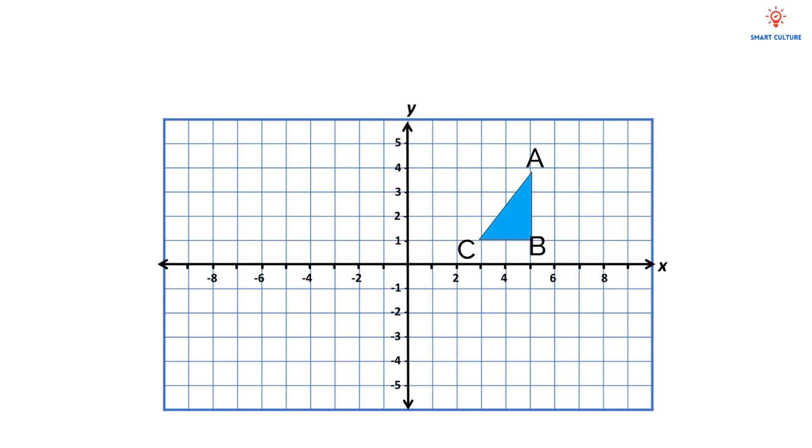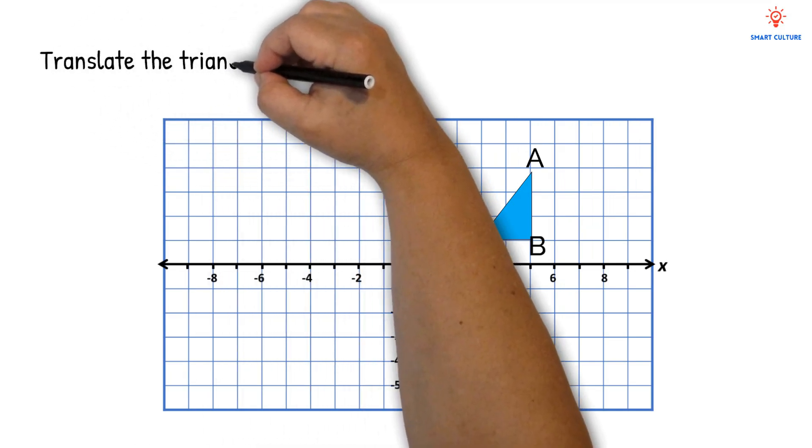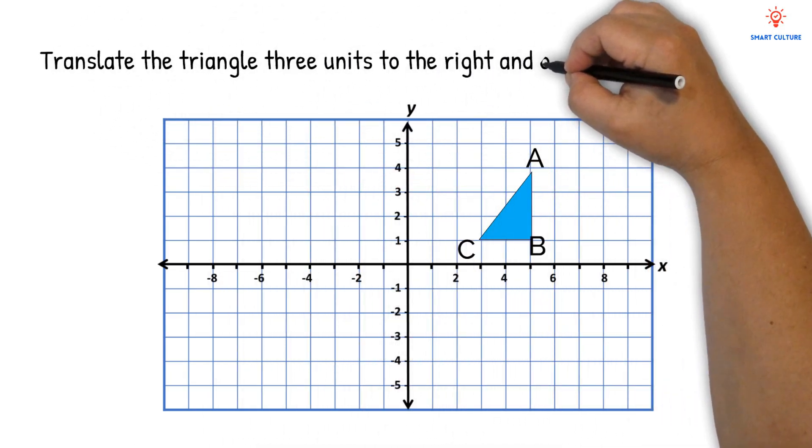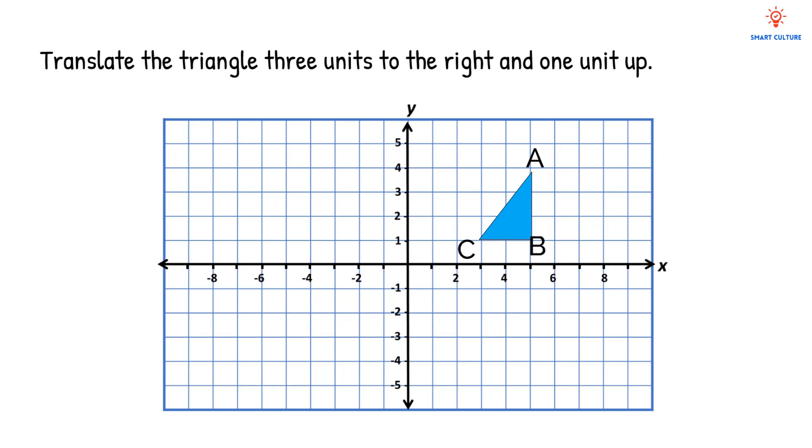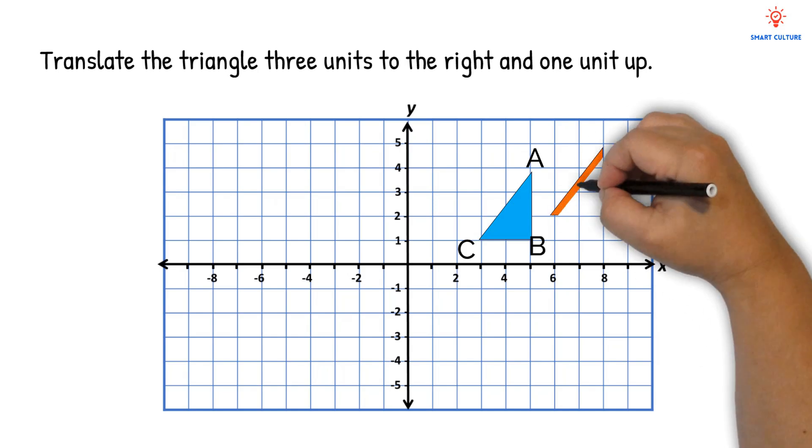Let's do another one. This time we need to translate the triangle three units to the right and one unit up. Where would that go? It would go over here.